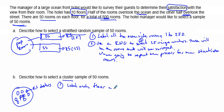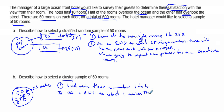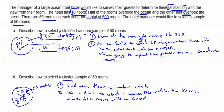For the cluster procedure, the first step is to label each floor with a number, 1 through 10. Next, we use a random number generator to select one number — this will be the floor in which ALL rooms will be surveyed. Since each floor has 50 rooms, selecting one floor gives us our sample of 50, which is exactly what we need.